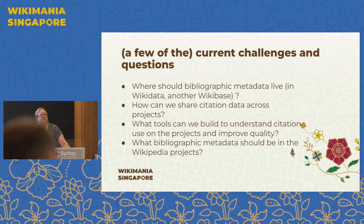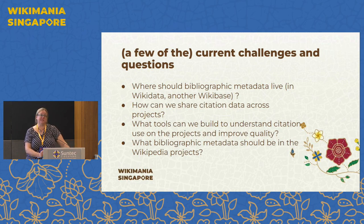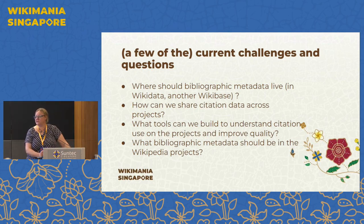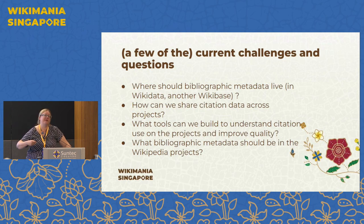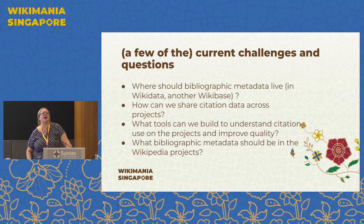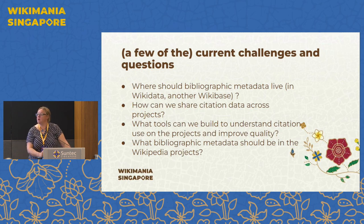The real meat of this is: what are the current questions about Wikicite? The big one Lydia already brought up is where should citation data be in the Wikimedia universe? Should it be in Wikidata? Should it be someplace else? The question is relevant because there are query problems — there's a lot of bibliographic data in the world and in Wikidata. We might not have room for all of it, or the ability to query all of it specifically.